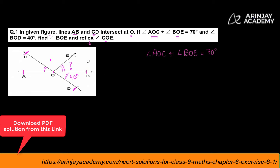Now, if you look at it, the lines CD and line AB intersect each other at point O. What this means is that the value of angle AOC should be equal to angle BOD, and why am I saying that? Because these two are actually vertically opposite angles. So angle BOD we know has been given to be 40 degrees; therefore, the value of angle AOC will also be equal to 40 degrees.